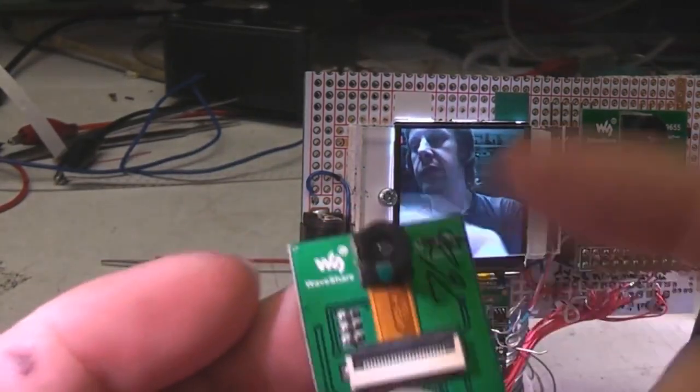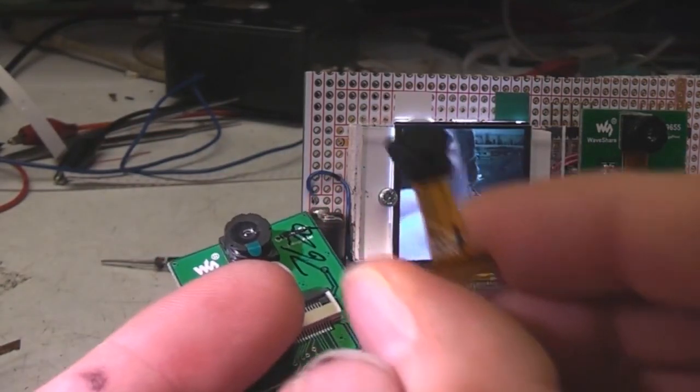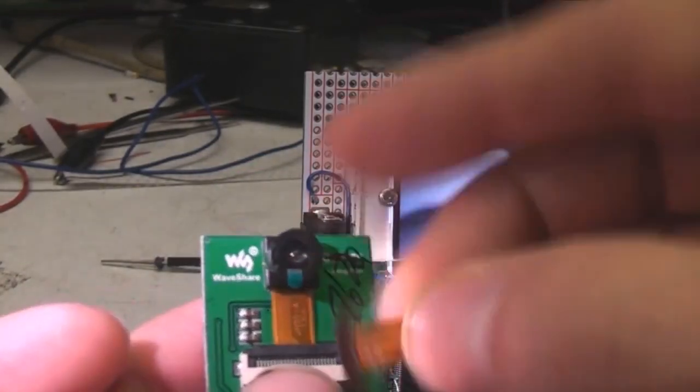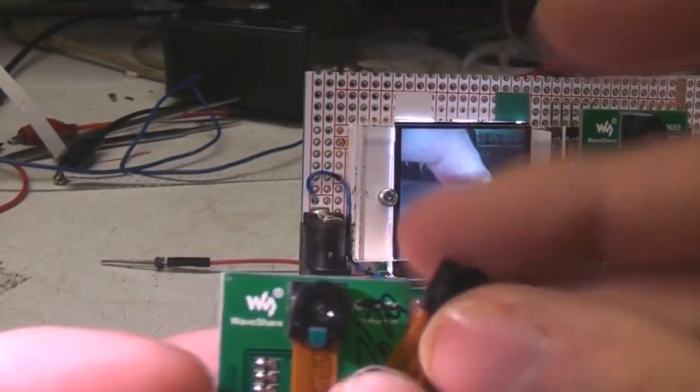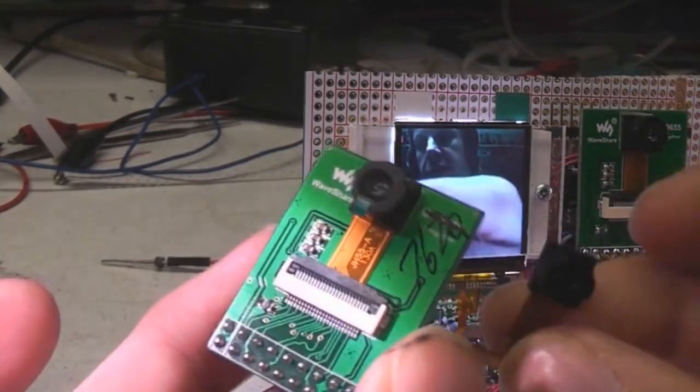One is quite similar to the Omnivision evaluation module and this one has got a Sunny brand name. And the pin outs of these are completely different. Even the flex contacts are on opposite sides. So these are totally different pin outs for basically the same chip which is something that you need to keep an eye out for.